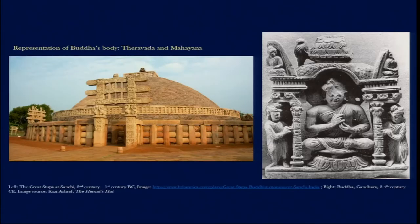That is why in the early development of Theravada we find mostly symbolic representation. But in the Mahayana belief, which became more prominent from the first century AD onwards, Buddha's body is represented as a human figure. In the Mahayana belief, Buddha himself is considered a deity — the idea of Bodhi is also important, but Gautama Buddha himself is worshipped as a deity. This is the basic difference between Theravada and Mahayana Buddhism, and both symbolic and bodily representations continued almost hand in hand.